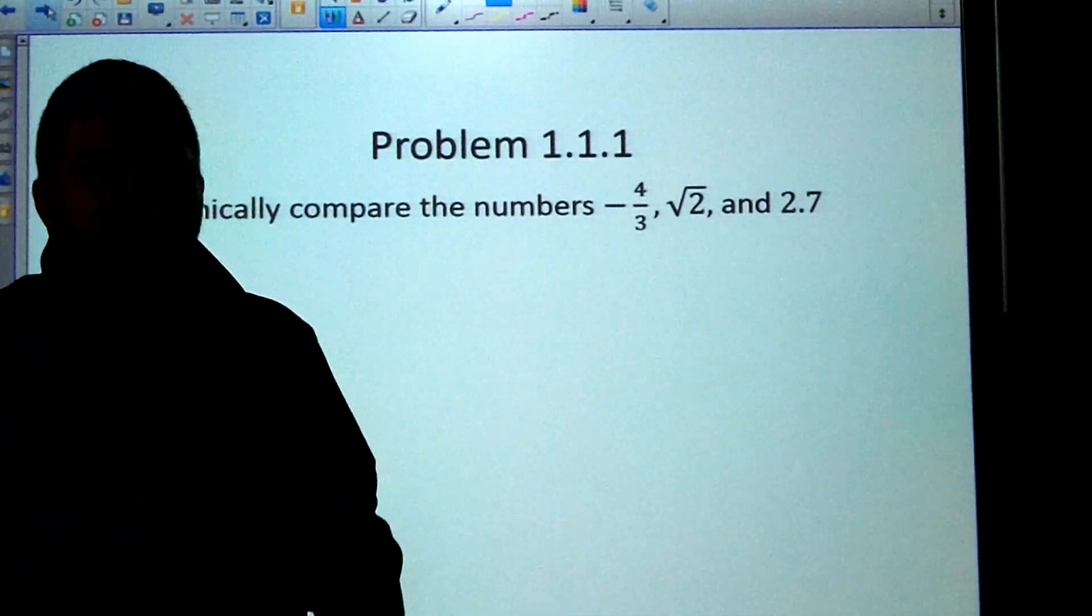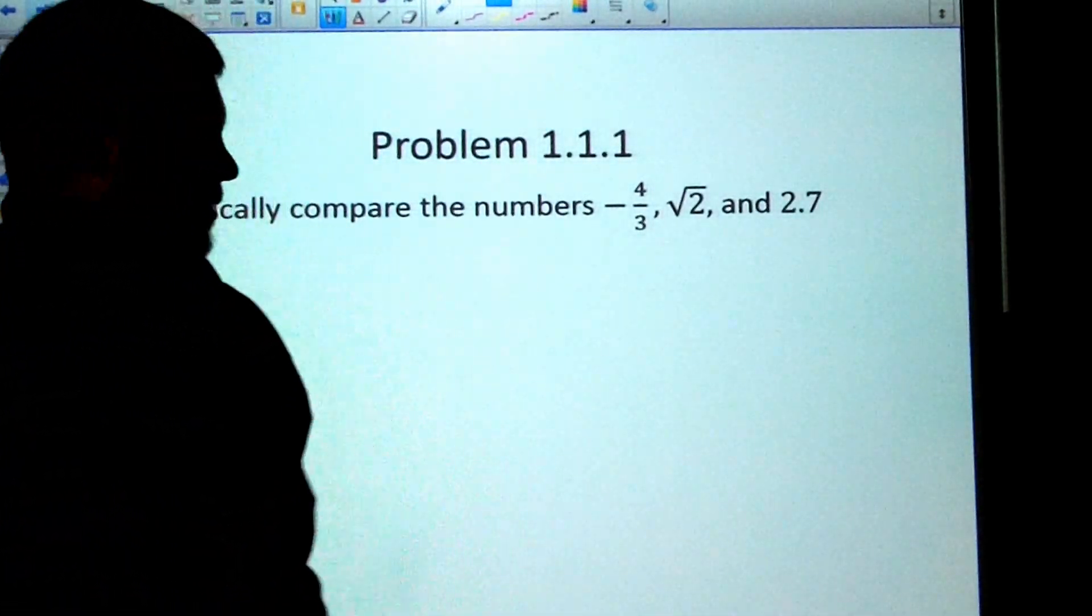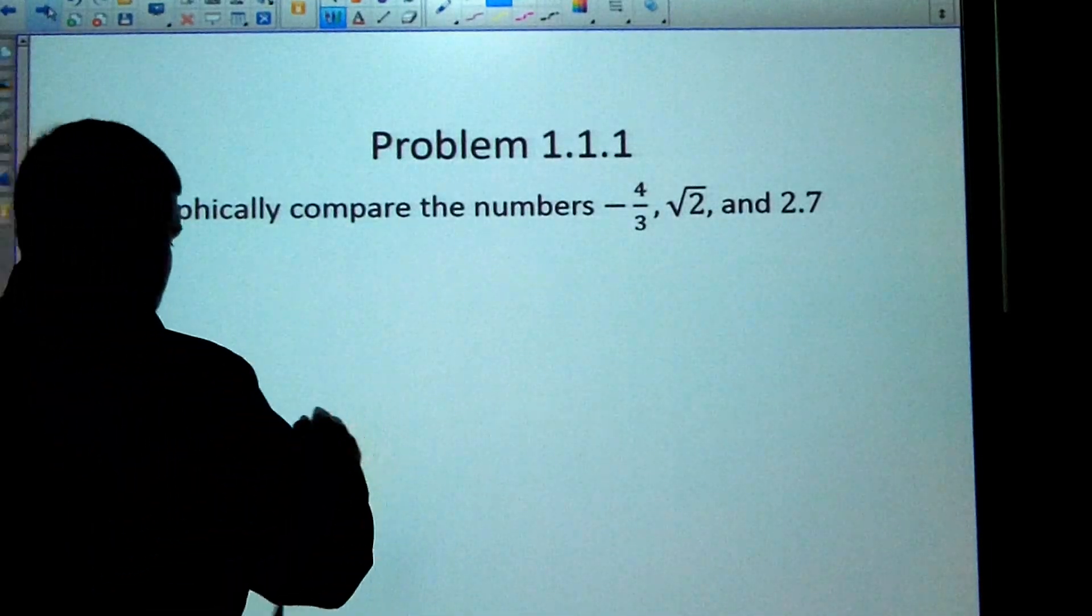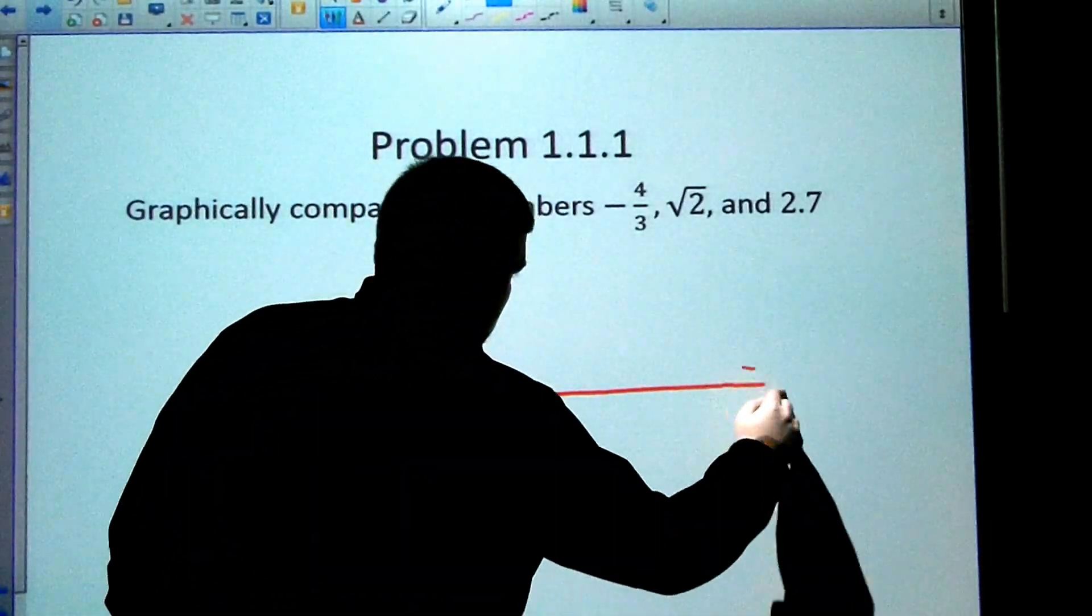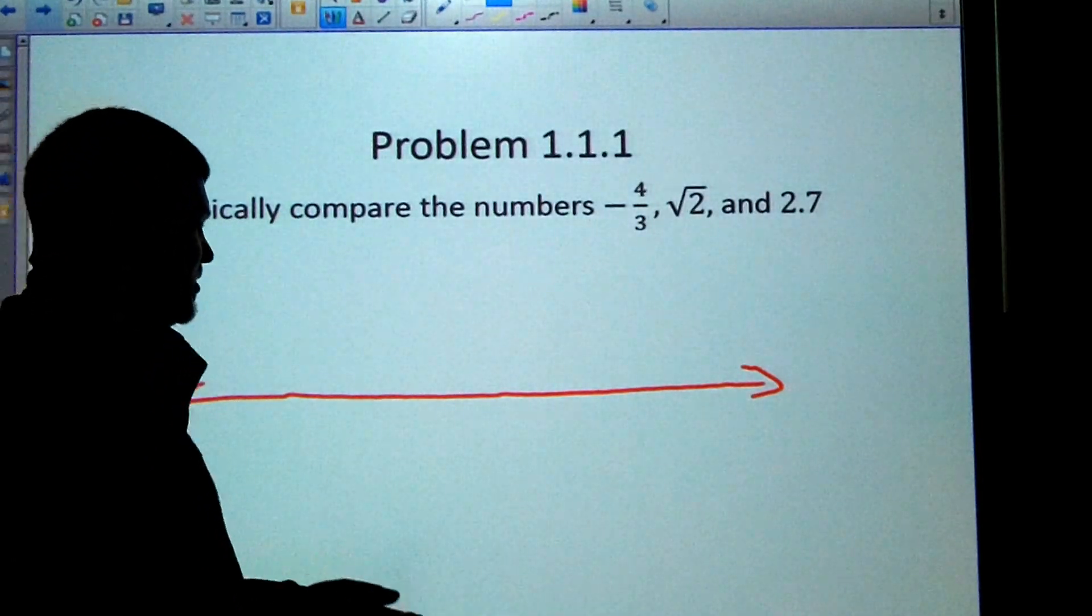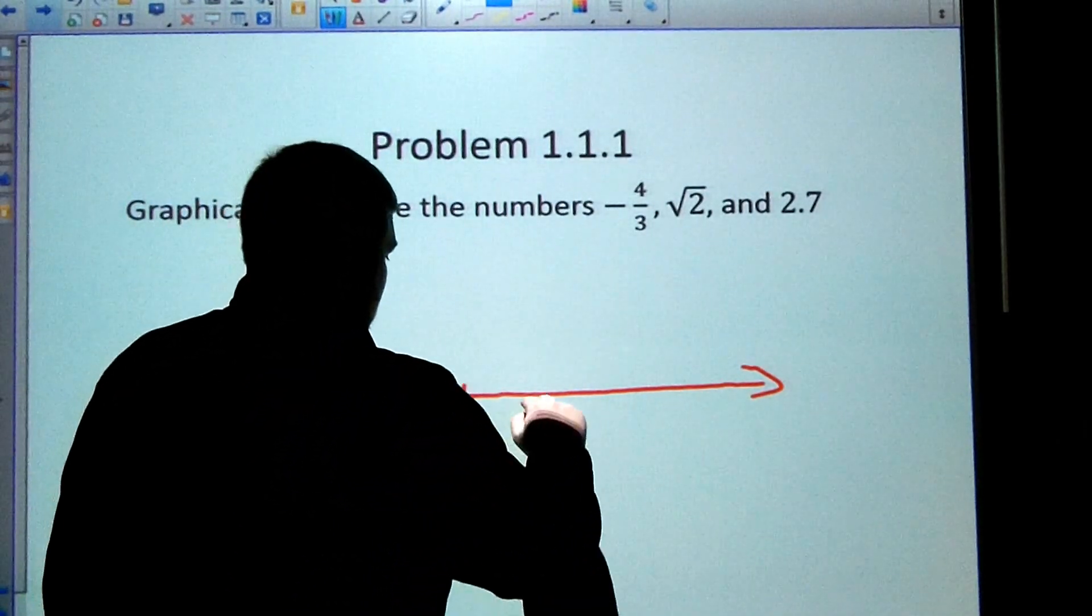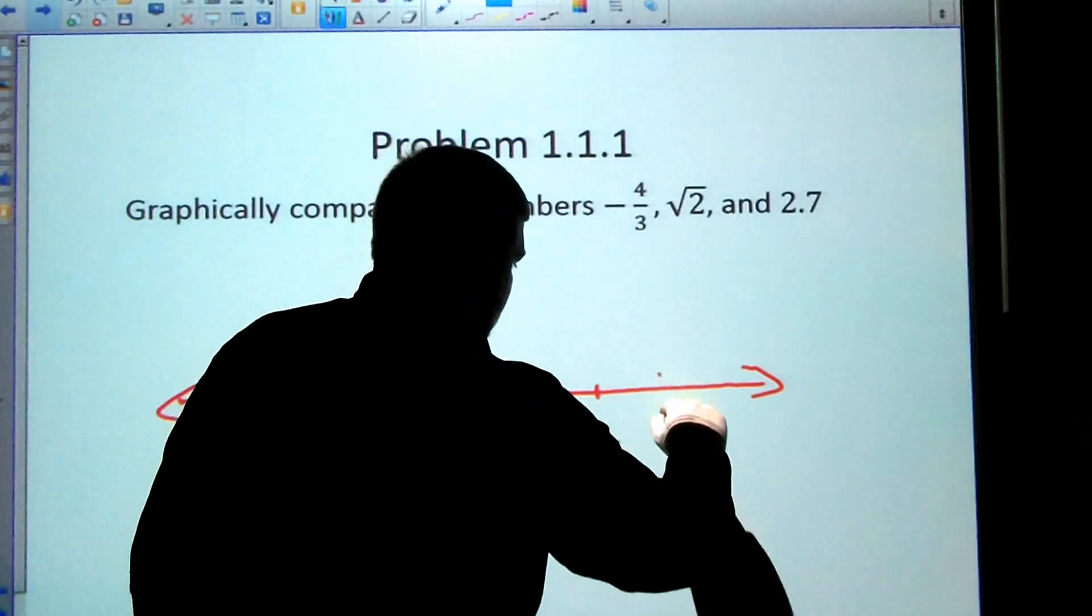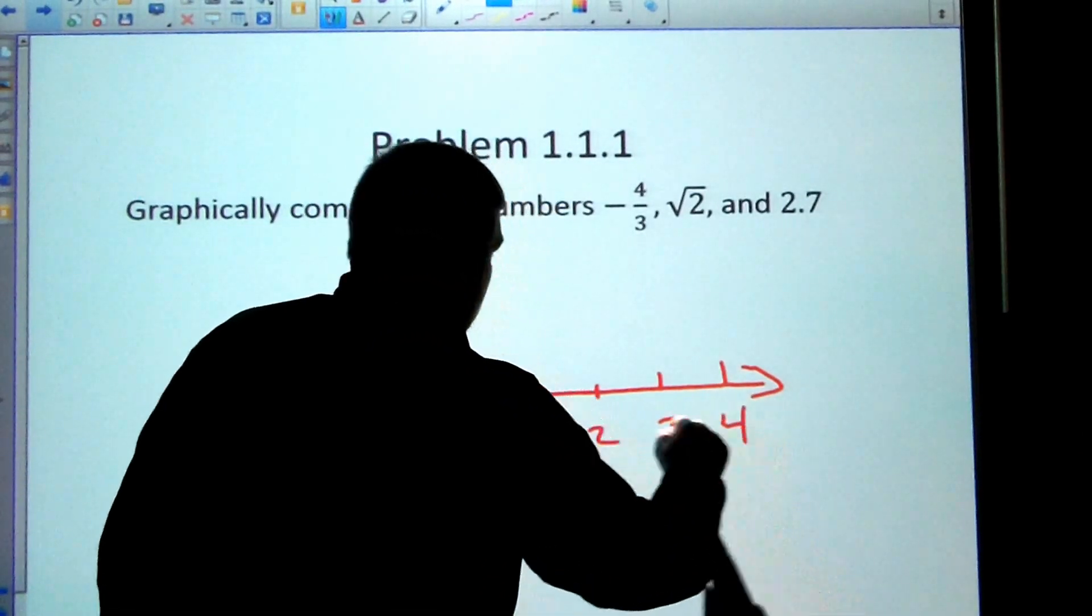All right, so we want to graphically compare these numbers on the number line. So we can do that. Draw the number line. Obviously, let's put some tick marks up here. So I have zero, one, two, three, four,